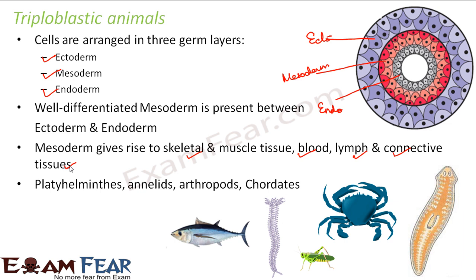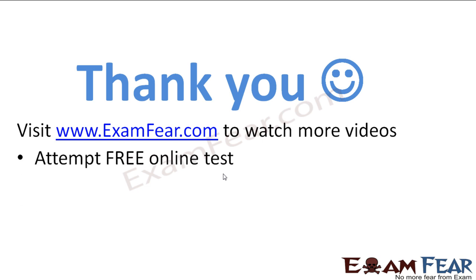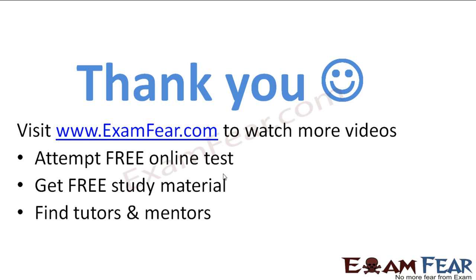So now you understand the arrangement of the germ layers during embryonic growth. This was our next basis of classification. Based on this, we could classify some animals as diploblastic, whereas some other animals as triploblastic. Thank you. Please visit examfear.com to watch more videos, attempt free online tests, get free study material, and find tutors and mentors. Thank you once again.